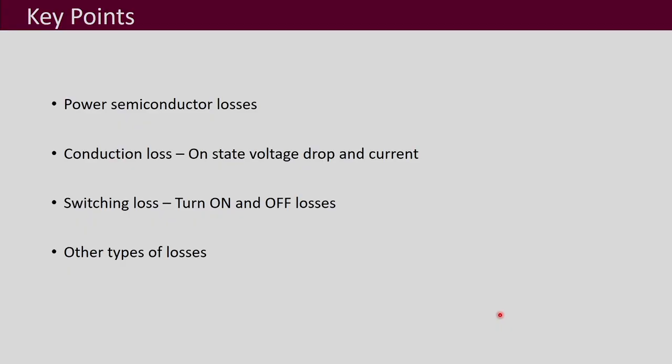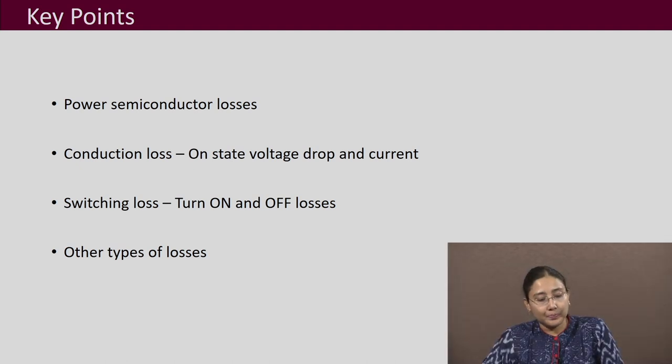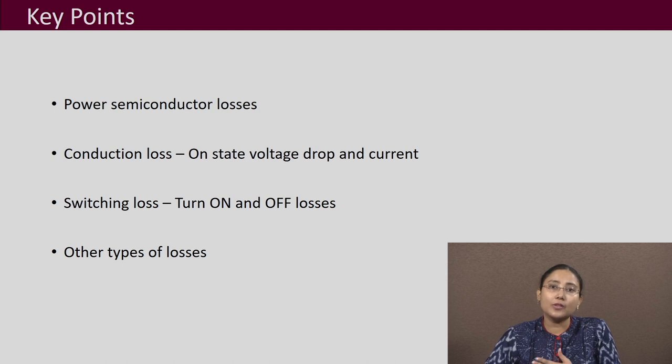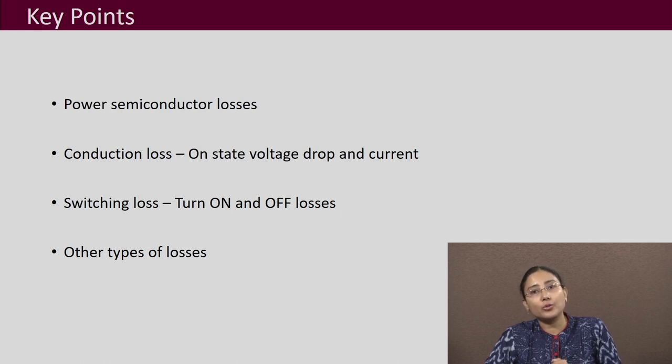The key points of this lecture: the main losses in power electronic converters are power semiconductor device losses. Apart from that, there are also losses due to magnetics and several other passive elements, with I²R losses in different elements. Power semiconductor device losses are of two types: conduction loss and switching loss. Conduction loss is due to the on-state voltage drop across the device. Switching loss is due to the turn-on and turn-off transitions when both current and voltage are simultaneously high for some period of time.